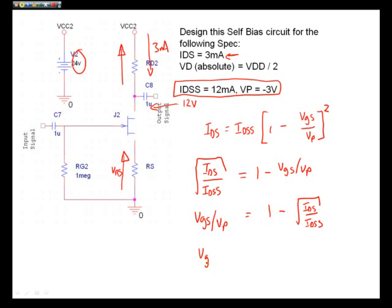I will now end up with VGS over VP is equal to 1 minus square root of IDS all divided by IDSS. Simple multiplication by VP. We now have VGS is equal to VP, brackets, 1 minus square root of IDS over IDSS.